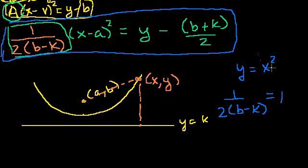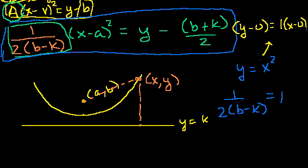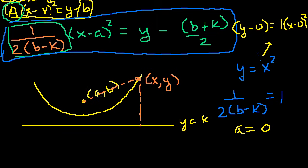I could rewrite this equation as y minus 0 is equal to 1 times (x minus 0) squared. Now you can see this has the same pattern — the coefficient (1 over 2(b minus k)) in front of the (x minus a) squared term has to equal 1. And a has to equal 0, since this is x minus 0 squared.